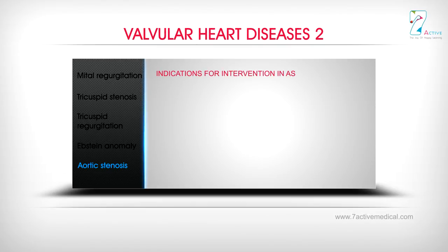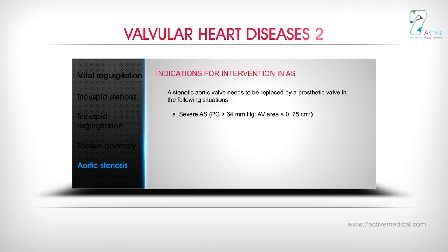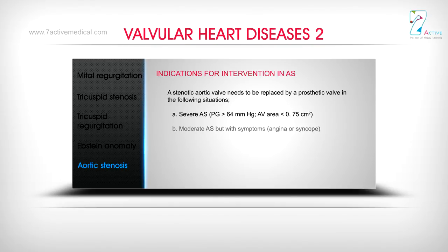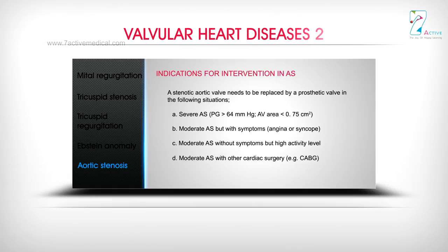Indications for intervention in AS: A stenotic aortic valve needs to be replaced by a prosthetic valve in the following situations: A) Severe AS — PG 64 mmHg, AV area less than 0.75 cm²; B) Moderate AS but with symptoms — angina or syncope; C) Moderate AS without symptoms but high activity level; D) Moderate AS with other cardiac surgery, e.g., CABG; E) Moderate to severe AS with LV systolic dysfunction.